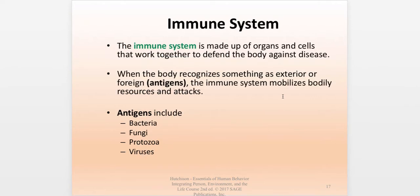The immune system itself is made up of organs and cells throughout the body that work together to defend it against disease. When the body recognizes something foreign in the system — called an antigen — the immune system mobilizes its resources and attacks those antigens to try to keep infection or disease at a minimum. Examples of antigens include fungi, bacteria, protozoa, and viruses.